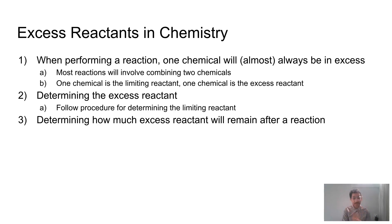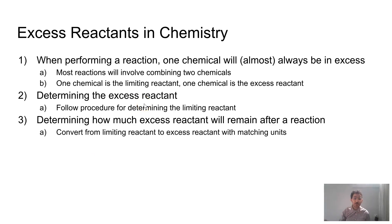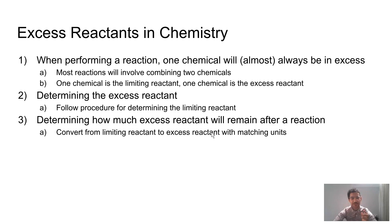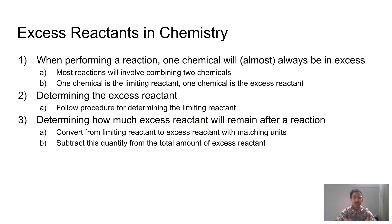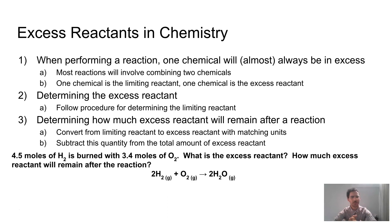So if we want to determine how much excess reactant will remain after a reaction, we first figure out what the excess reactant is. Then, using our limiting reactant, we figure out how much excess reactant it will react with. We convert from our limiting reactant — whatever that number and units are — into our excess reactant so the units match. For instance, if we're given liters of the excess reactant, we'll convert from limiting to excess in liters. Then we find the difference between what gets used up and how much we actually started with.